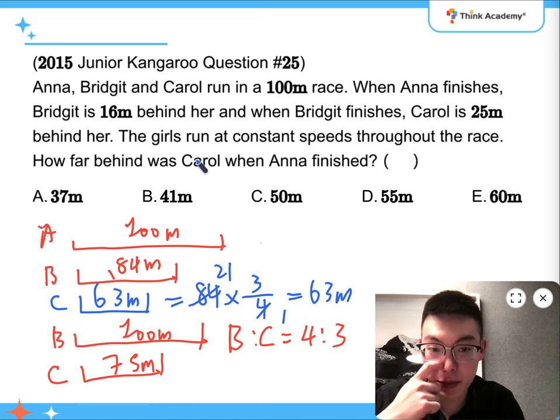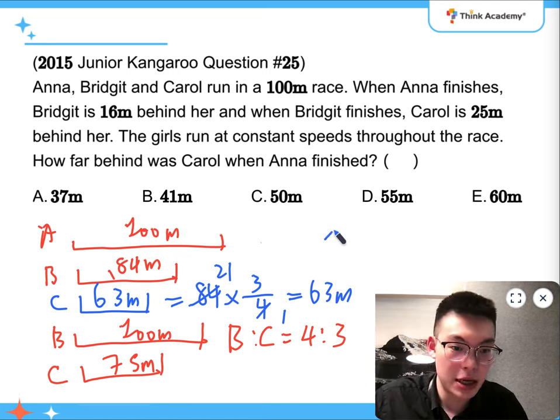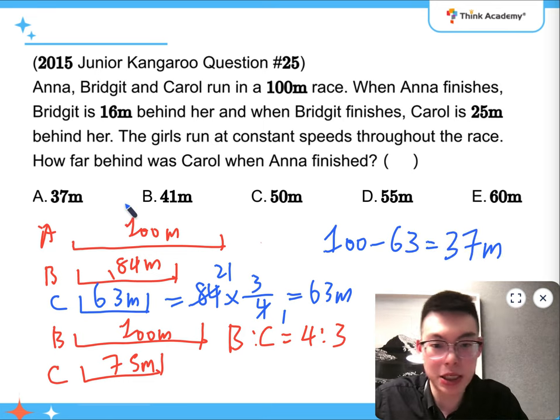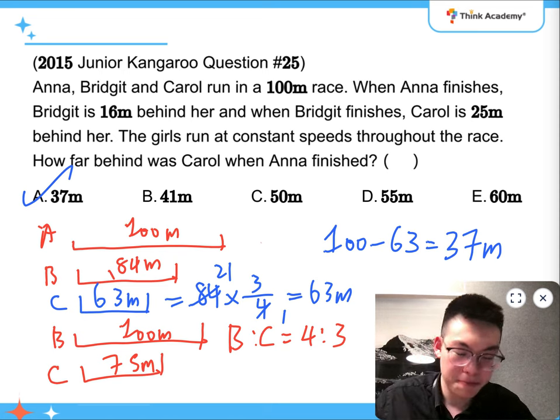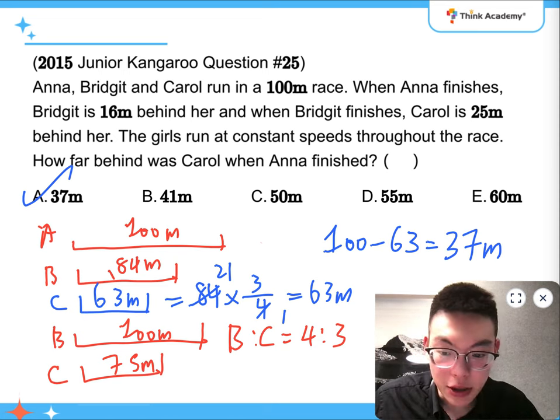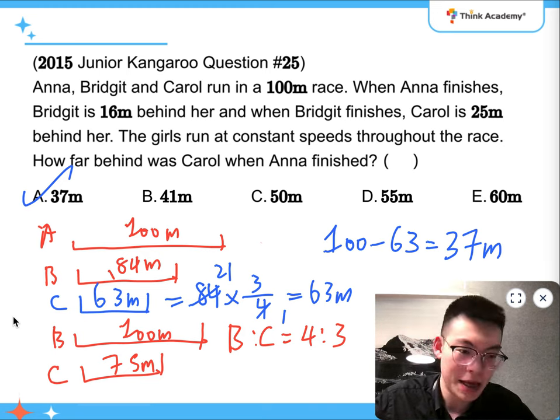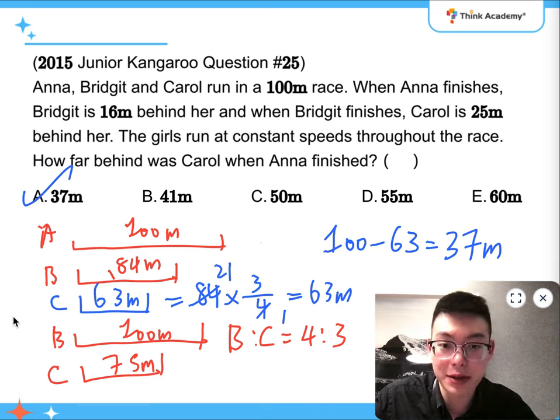So how far behind was Carol when Anna finishes? It's a hundred take away sixty-three, that's going to be thirty-seven meters. So the answer is A. Alright, so that's for questions twenty-one to twenty-five, and that's everything for the 2015 JK paper. Thank you.